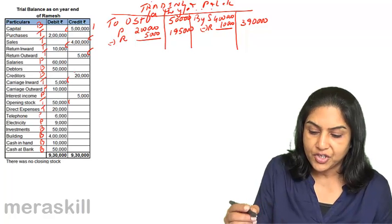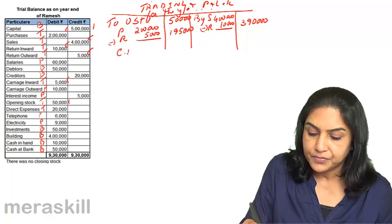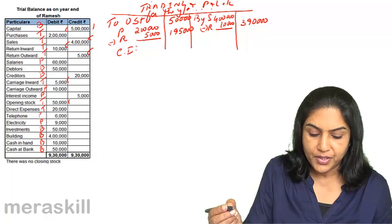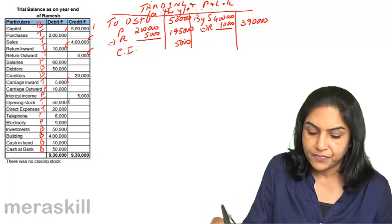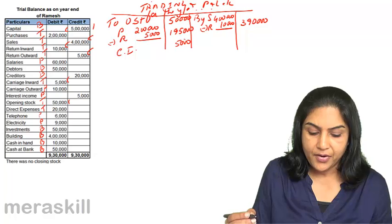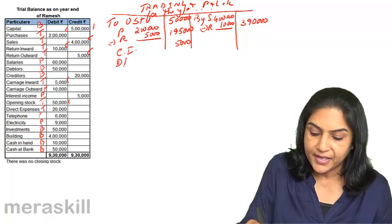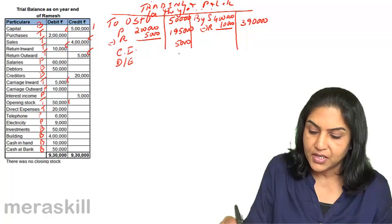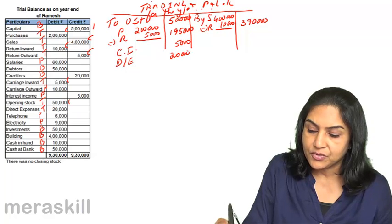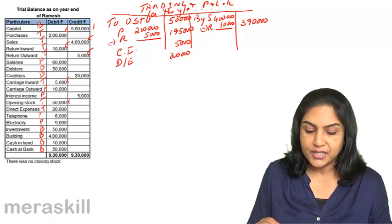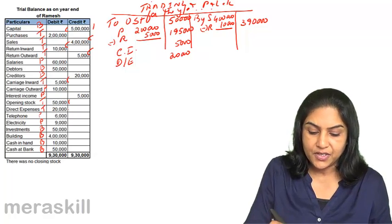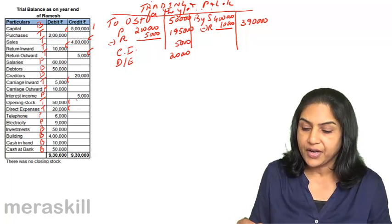Next, we will take carriage inward: 5,000. There are other direct expenses of 20,000. Telephone, electricity, investments, and building are not trading account items. That covers everything in the trading account.